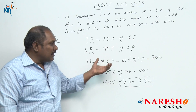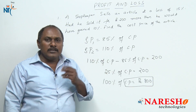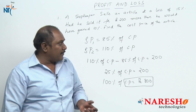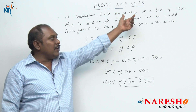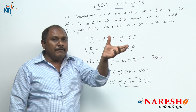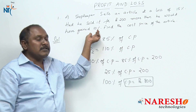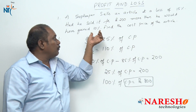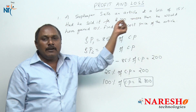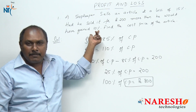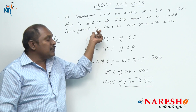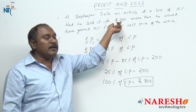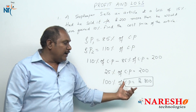This is one method, but logically speaking, how can we find the answer orally in a simple way? Initially he sells at a loss of 15 percent, and later he gains 10 percent. The difference from minus 15 to plus 10 is 25 percent. That 25 percent is on cost price. So 25 percent of cost price is 200, and 100 percent gives us 800.